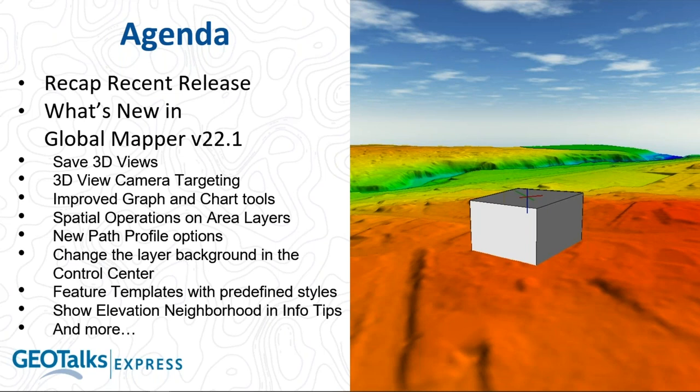The last item on this list is a new option in info tips for looking at the elevation neighborhood. This was partly developed in conjunction with the terrain painting tool. If you are using terrain painting in the LiDAR module to modify your terrain, but there are other applications as well — it's nice to look at not just the pixel information exactly where your cursor is, but the surrounding pixels as well. We can now show the neighborhood of pixels around where your cursor is to see what's going on in the raw data.